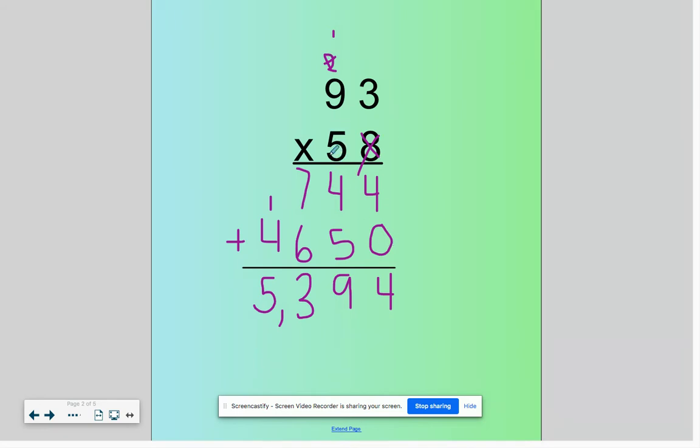We're now ready to multiply with our 5. Our 5 is worth 50, so we put that 0 as a placeholder to make sure we're multiplying 50 times 3 and 50 times 90. So 5 times 3 is 15. I put my 5, carried my 1. 5 times 9 is 45, plus 1 is 46.